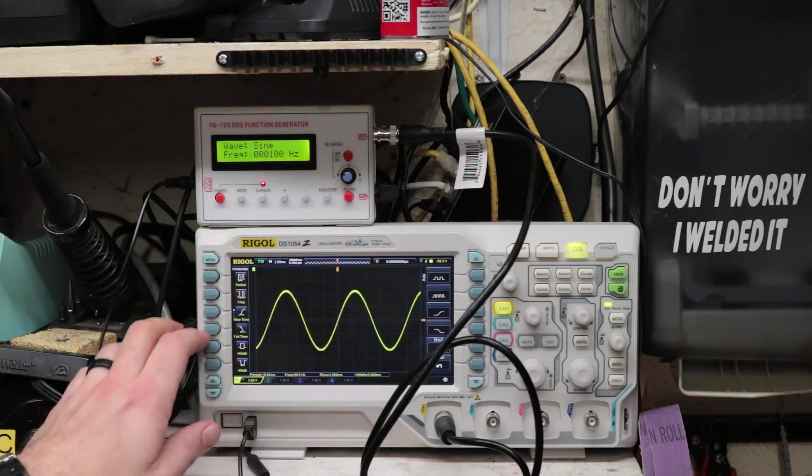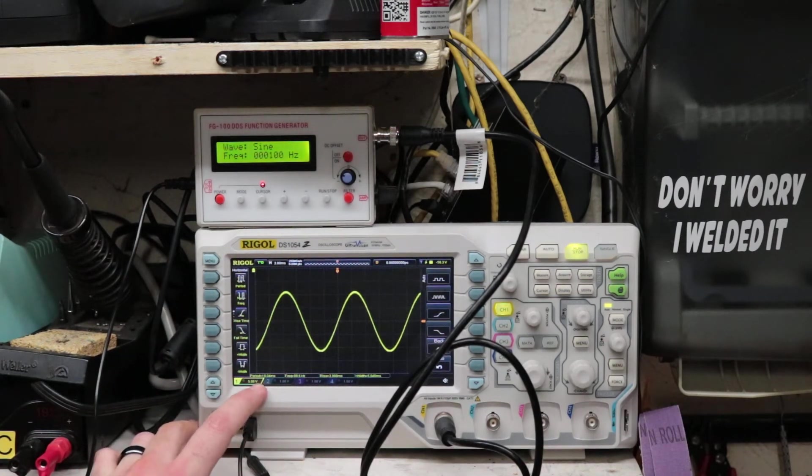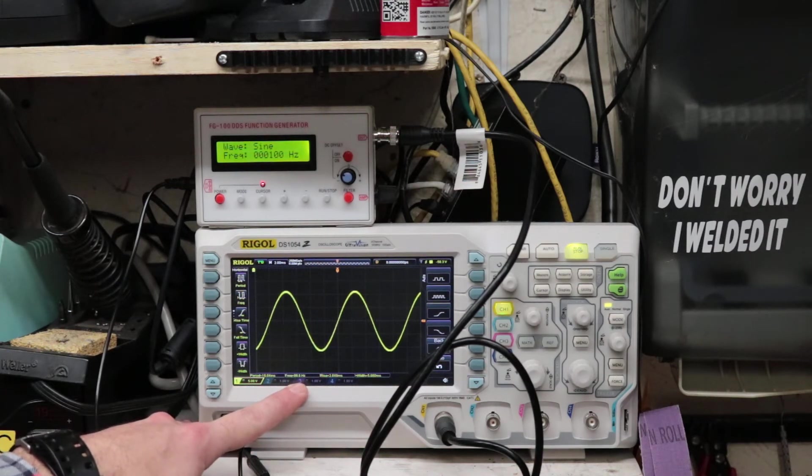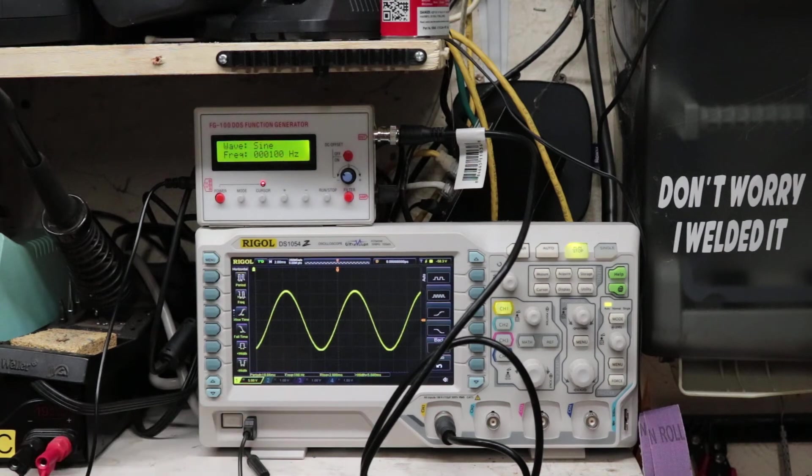We'll hit start and then hit auto on our scope. Pretty nice looking sine wave. Down here, I don't know how well you can see it, the frequency is 99.6 Hz, which is a pretty small percentage off from 100 Hertz, so relatively accurate on the low end.